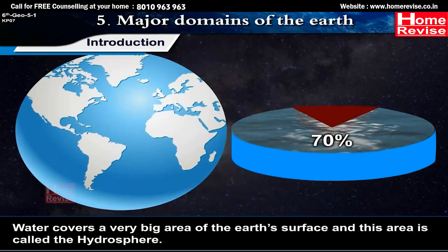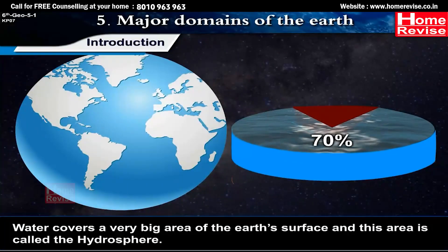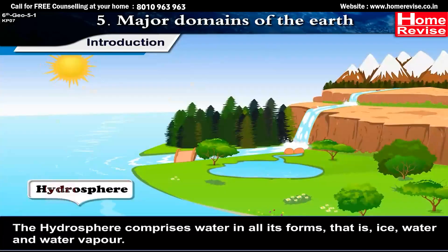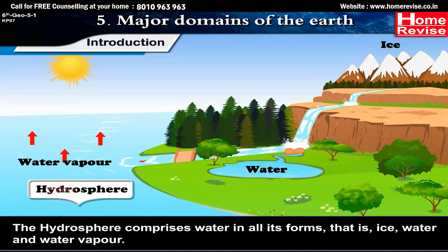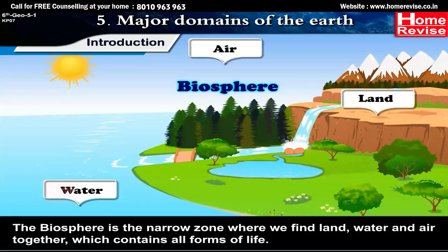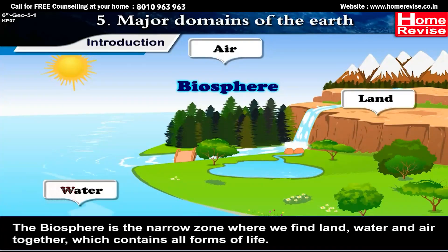Water covers a very big area of the Earth's surface and this area is called the Hydrosphere. The hydrosphere comprises water in all its forms, i.e. ice, water and water vapour. The biosphere is the narrow zone where we find land, water and air together, which contains all forms of life.